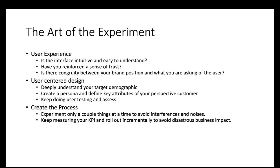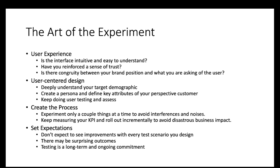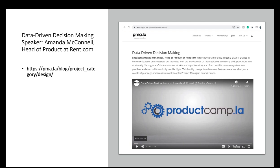Keep doing user testing and assessing, and create a process of experimentation — only test a couple of things at a time to avoid interference. Keep measuring your KPIs, and once you find success, roll out changes incrementally to avoid disastrous impact, because sometimes the 2% you tested behave differently than your full user base. Set expectations: don't expect improvement with every test scenario — many will fail and your original design may still be best. However, there can be surprising outcomes, so testing is a long-term and ongoing commitment. Finally, there's a great presentation on optimization by the head of product at Red.com showing how they used Optimizely and a systematic optimization process to lift their conversions.